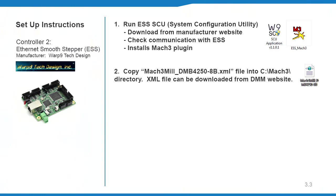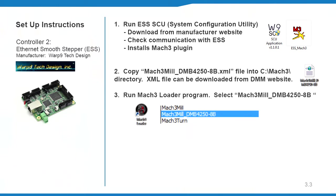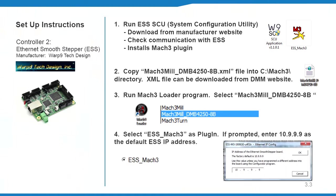Since we are using the DMB breakout board, load the XML file and copy it into the C:\Mach3 directory. Run Mach 3 loader and select the Mach 3 DMB4250 profile. At the plugin screen, select ESS Mach 3. If communication is not achieved, manually enter the default IP address and click OK. Then clear Mach 3 reset to finish.